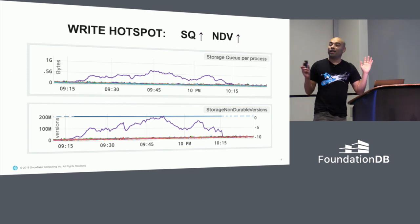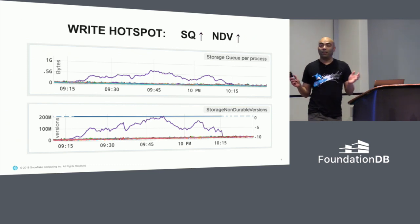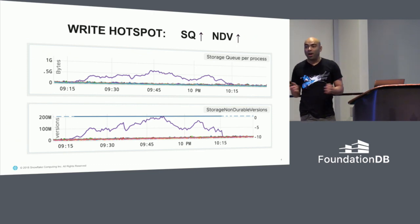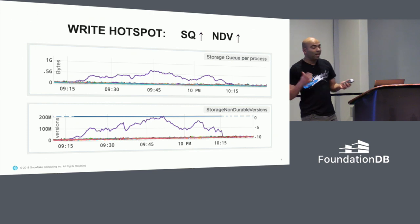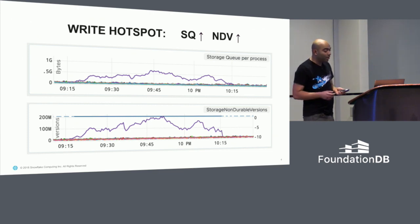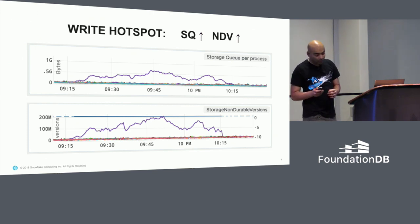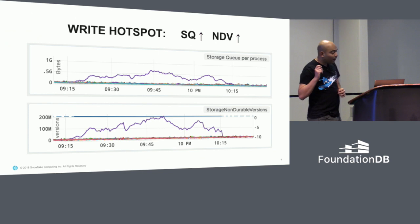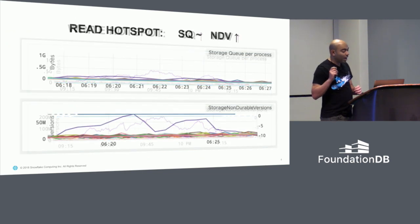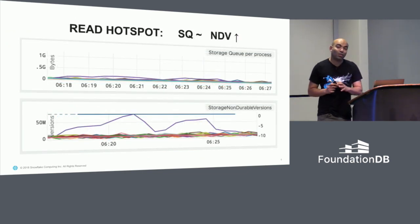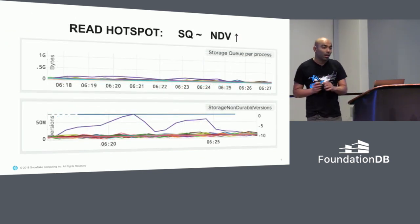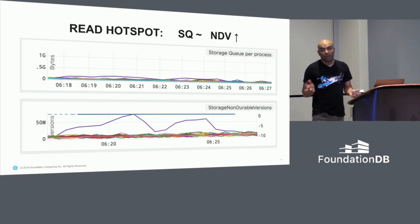If you want to detect two kinds of things: if you have a write hotspot, you will find that both the storage queue and the NDV go up simultaneously on a specific process. If you have a read hotspot, you will find that only the NDV goes up and not so much the storage queue.